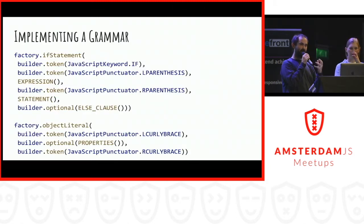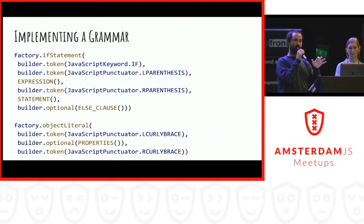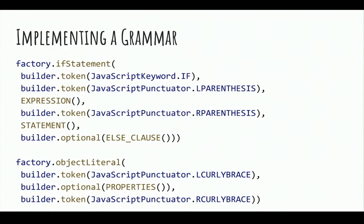You build this by recursively navigating structures you try to match. To recognize an if statement: it must start with 'if', then have a left parenthesis, then an expression, then a right parenthesis, then a statement, and optionally an else clause. The same applies recursively to object literals, expressions, and so on — it can be cyclic, since a statement can contain another if statement.